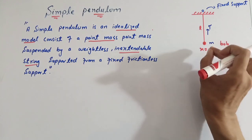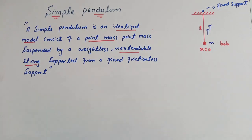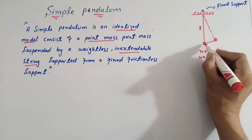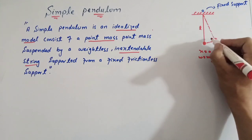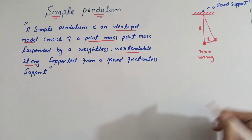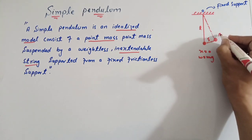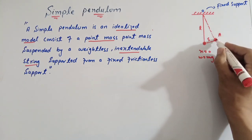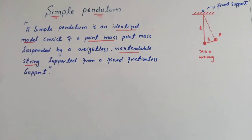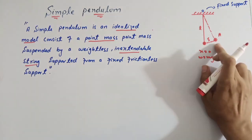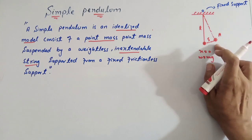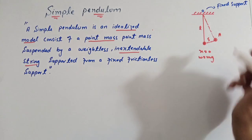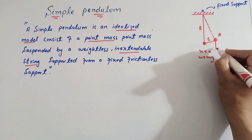اس position کو ہم equilibrium position یا mean position کہتے ہیں۔ اب میں نے اس bob کو equilibrium position سے ذرا displace کیا by displacement A۔ تو اب point A پر اس body پر net force zero کے برابر نہیں ہے — اب وہاں ایک force mean position کی طرف لگ رہی ہے۔